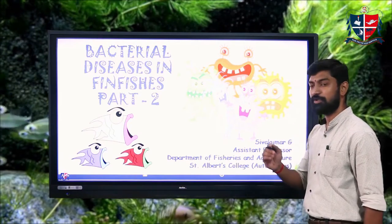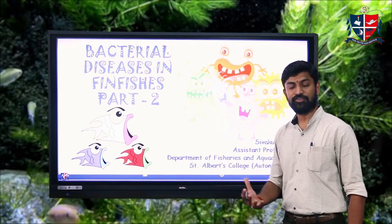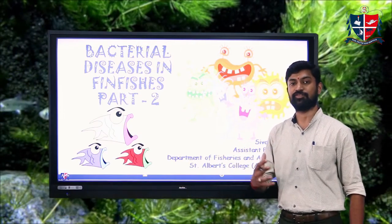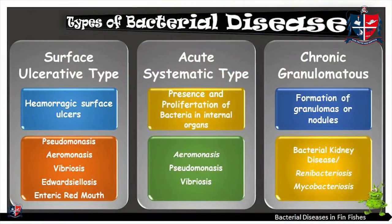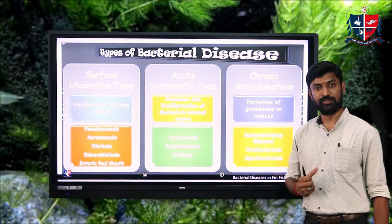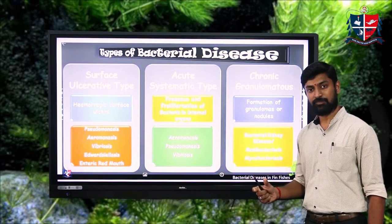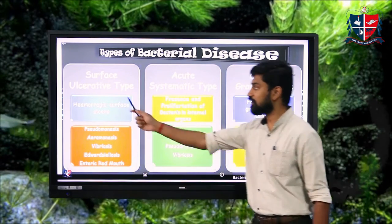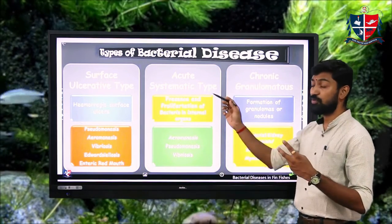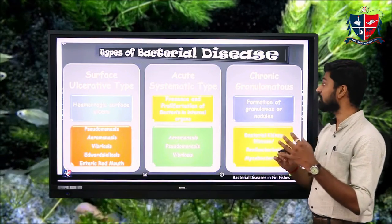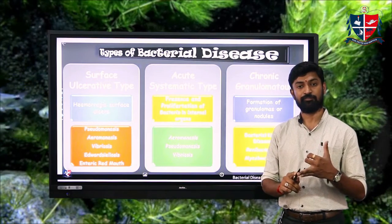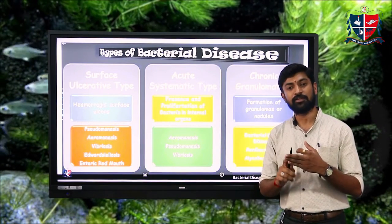In this section we are discussing about the major bacterial diseases present in fin fishes. There are mainly three types of bacterial diseases: the first one is surface ulcerative type, the second one is acute systematic type, and the third one is chronic granulomatous type.